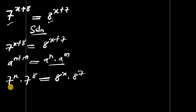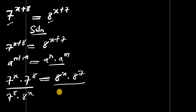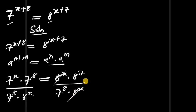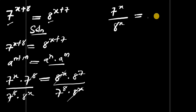We can divide both sides of this equation by 7 to the power of 8 times 8 to the power of x. The 7 to the power of 8 cancels with 7 to the power of 8, and 8 to the power of x cancels with 8 to the power of x. So we get 7 to the power of x divided by 8 to the power of x equals 8 to the power of 7 divided by 7 to the power of 8.